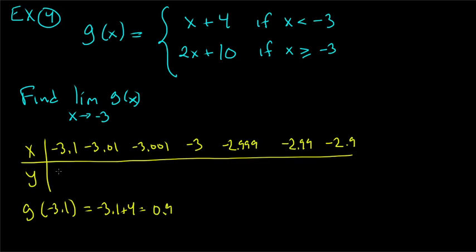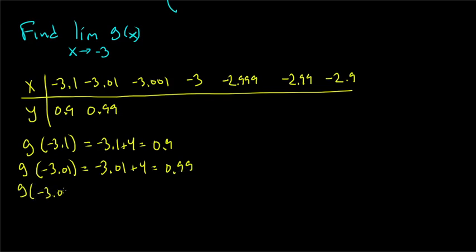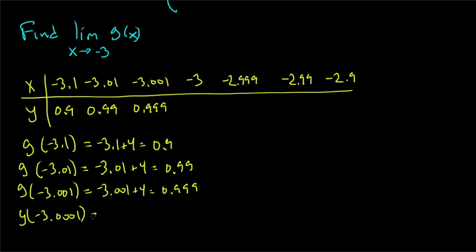Since −3.1, −3.01, and −3.001 are all less than −3, we use the top piece x + 4. So: −3.1 + 4 = 0.9, −3.01 + 4 = 0.99, −3.001 + 4 = 0.999. These are clearly getting close to 1. Maybe this limit is 1.